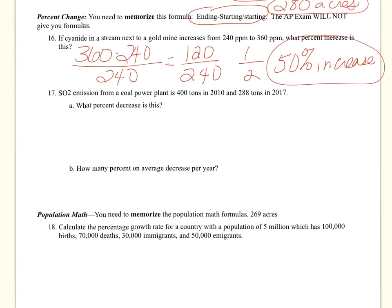Number 17, SO2 emissions from a coal power plant is 400 tons in 2010, and it declined to 288. They probably put wet scrubbers on the coal stack. So now we're going to solve. The ending number is 288. The starting number is 400. And our starting number is 400. So now we're going to get a negative number, which is fine because we're decreasing. It says a percent decrease, so that's fine to get a negative number.